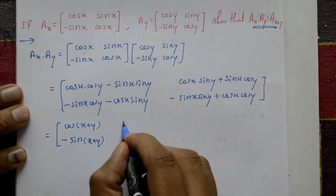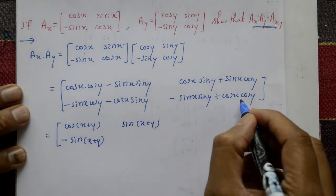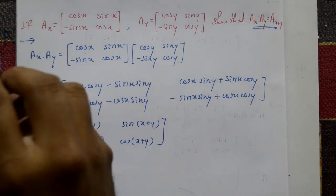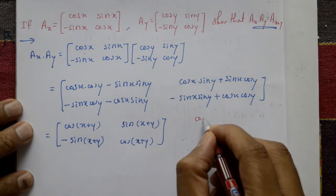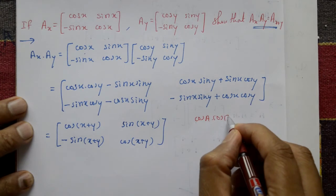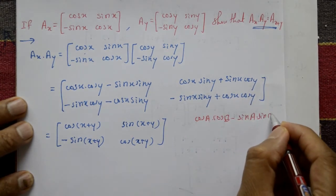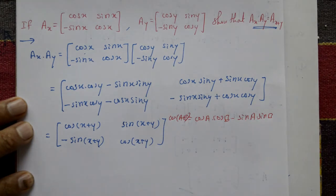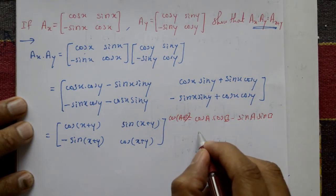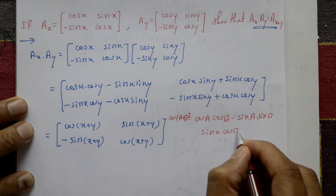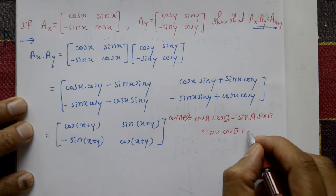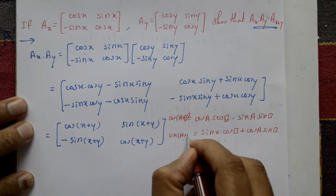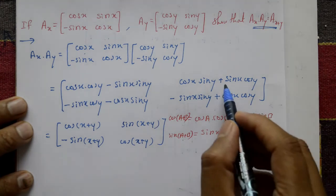This uses the basic formula: cos A into cos B minus sin A into sin B equals cos(A plus B). And one more formula: sin A into cos B plus cos A into sin B equals sin(A plus B). We apply these formulas similarly in this case.